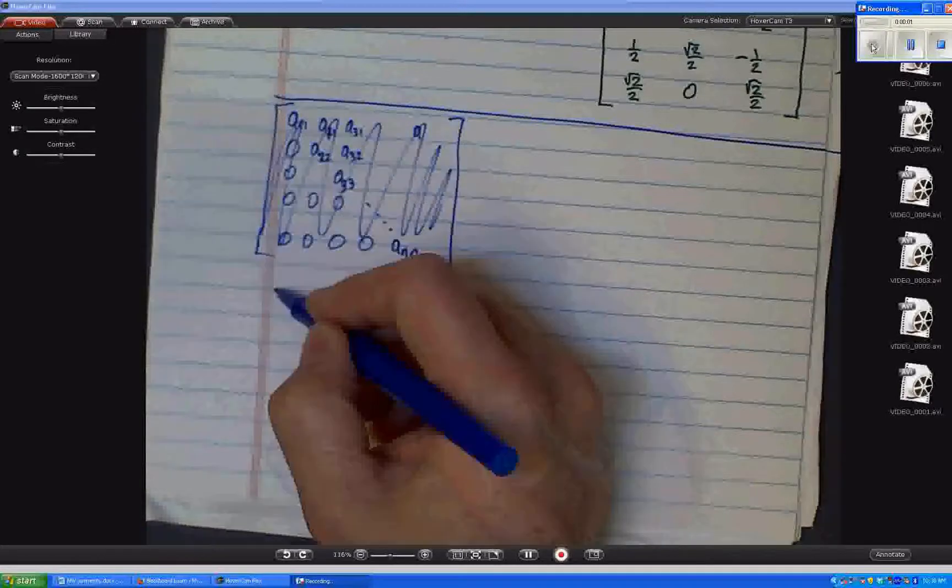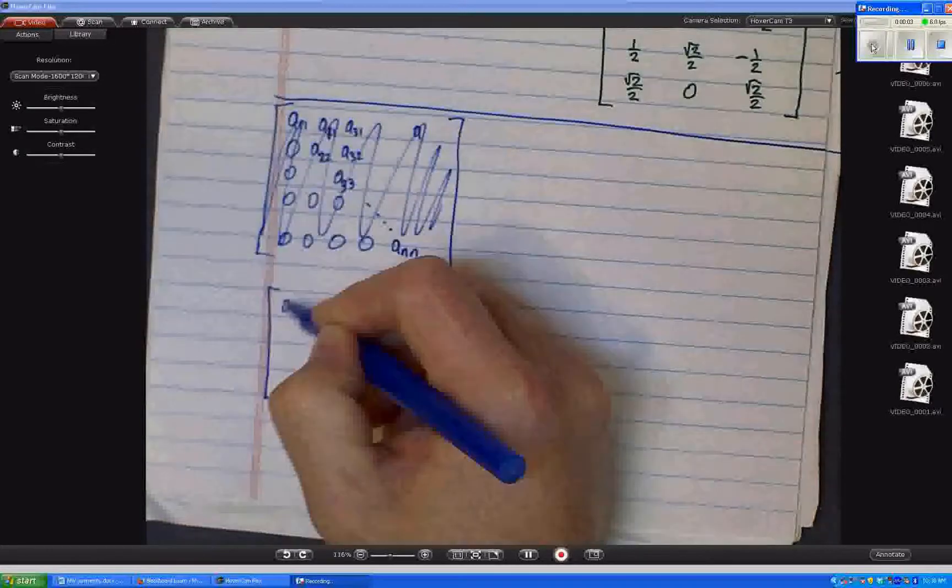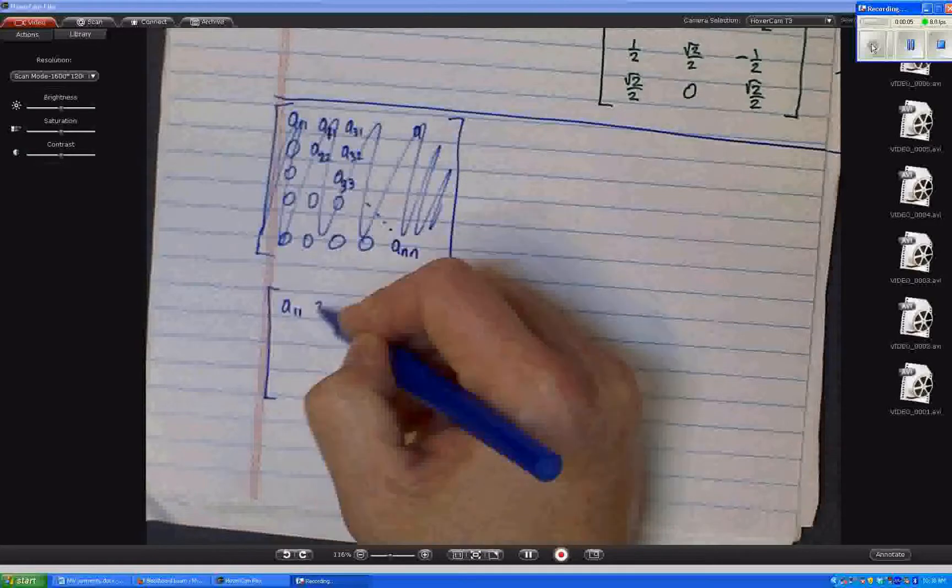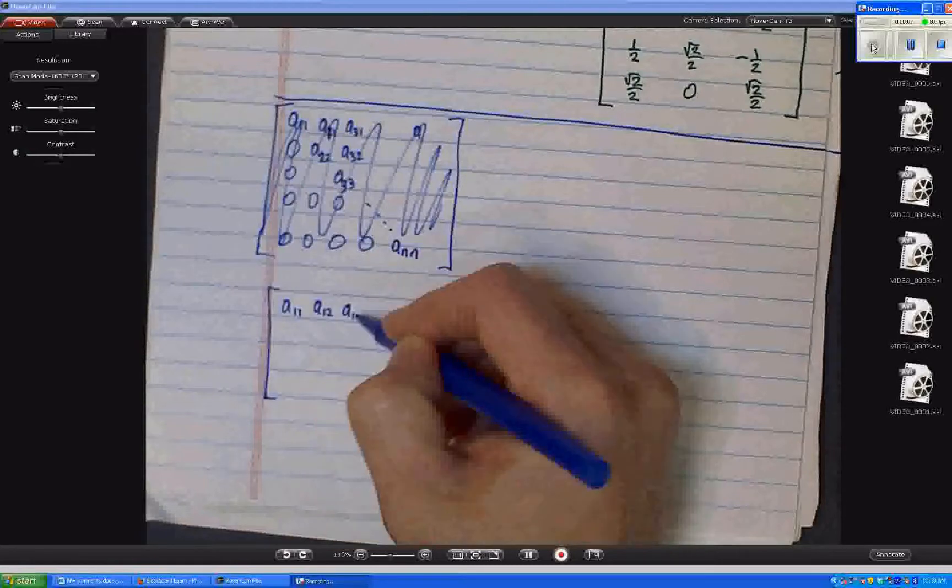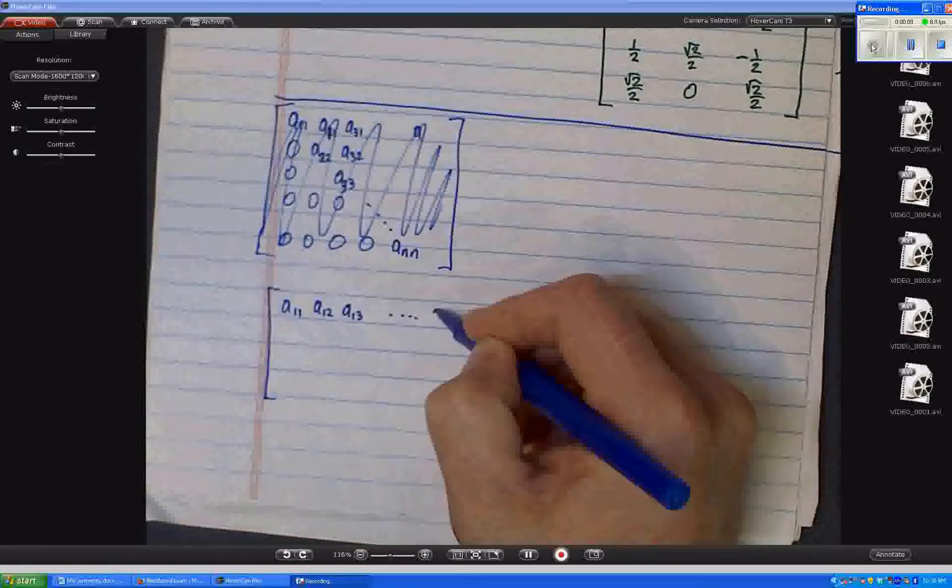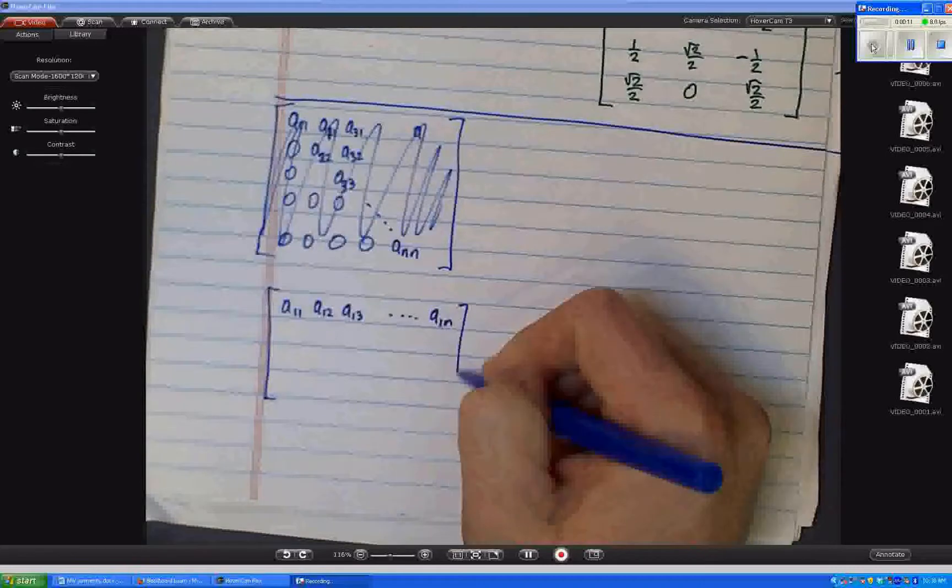Okay, let's try to write that out again. So A11, A12, A13, all the way to A1N. That's the first row of my matrix.